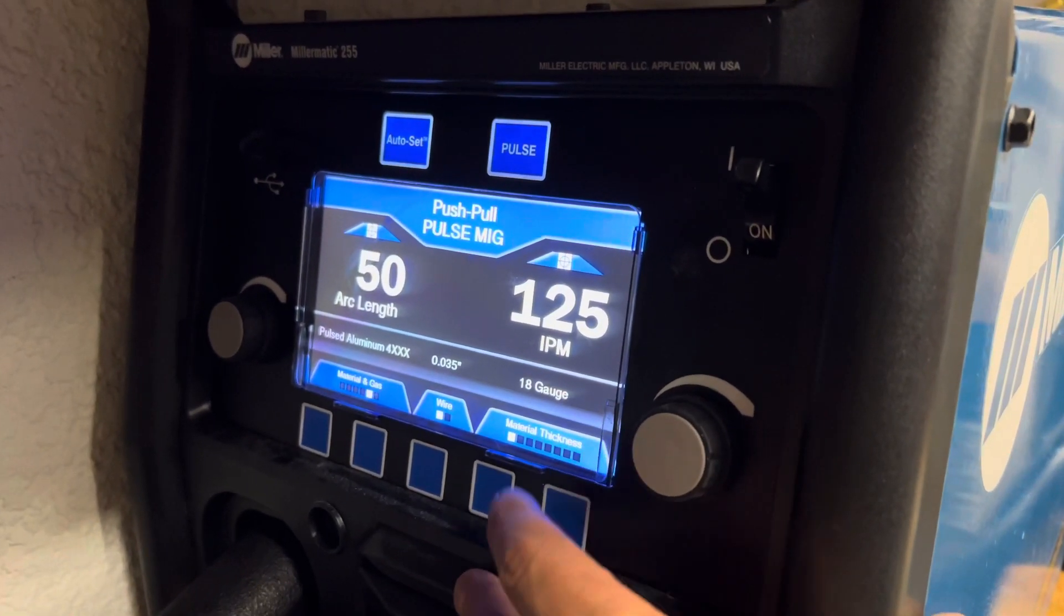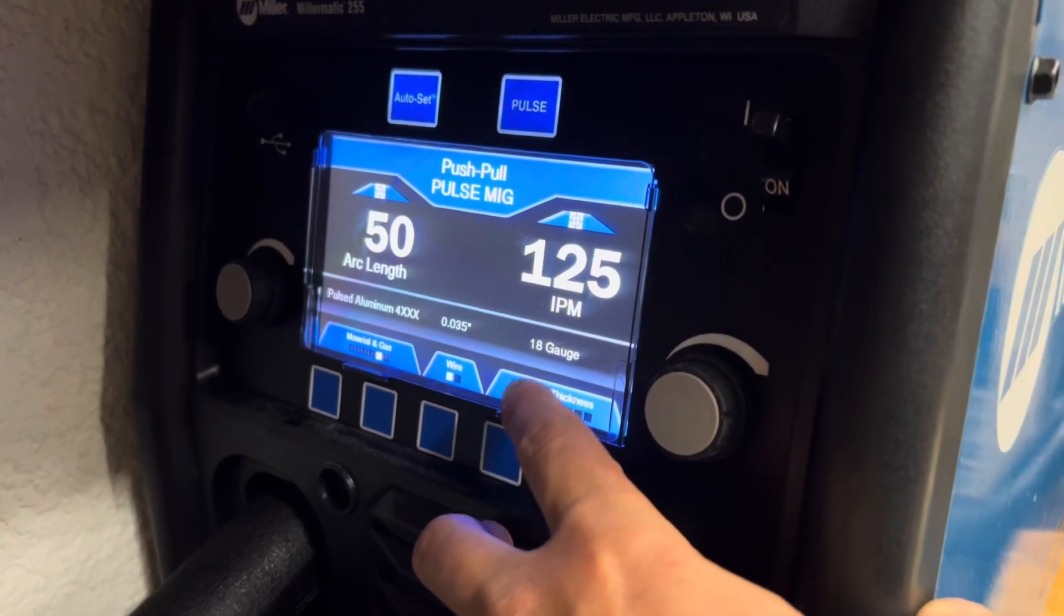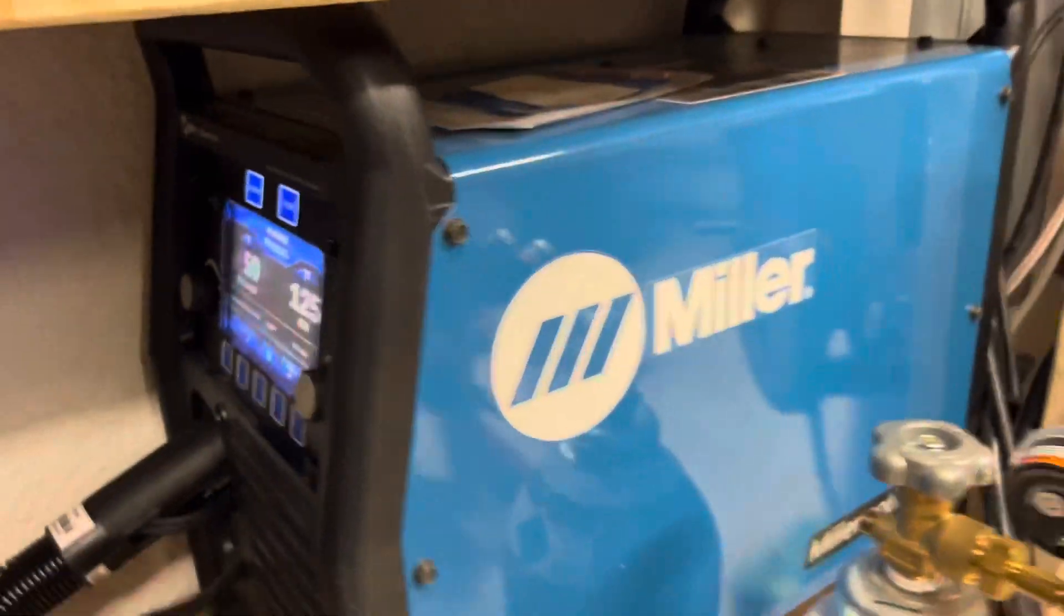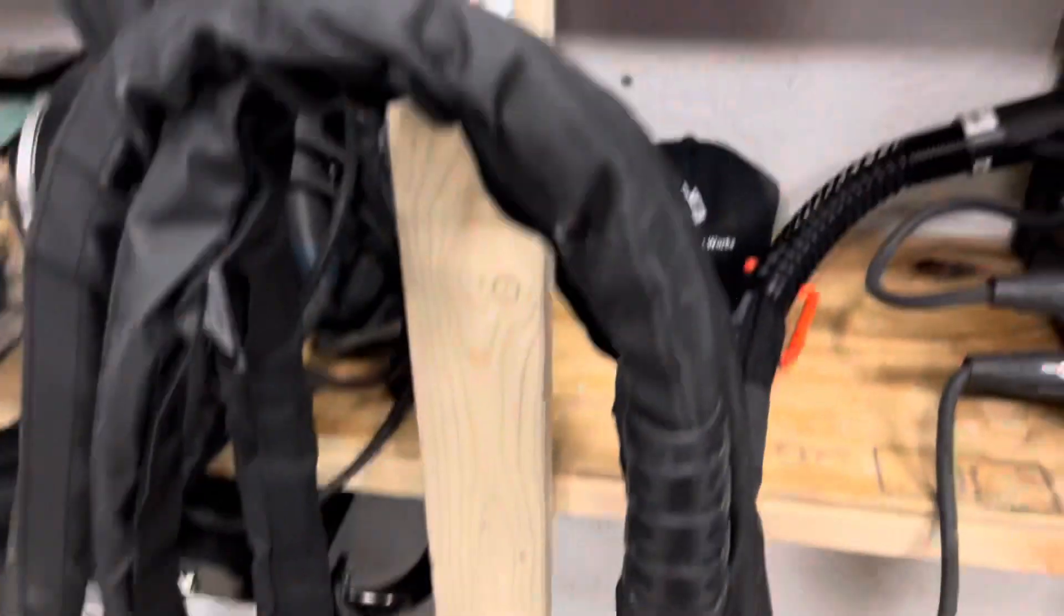The lowest wire speed it'll go down to is 125. So at 125 with the voltage, it says that I can weld 18-gauge. So we're going to get the push-pull gun out and try to weld some 18-gauge with it.